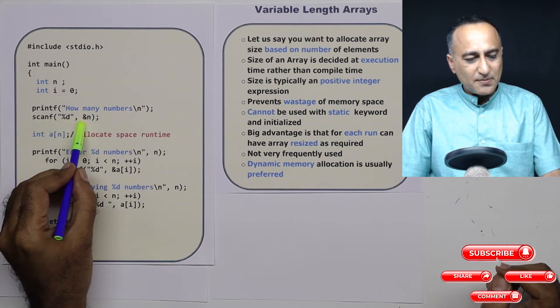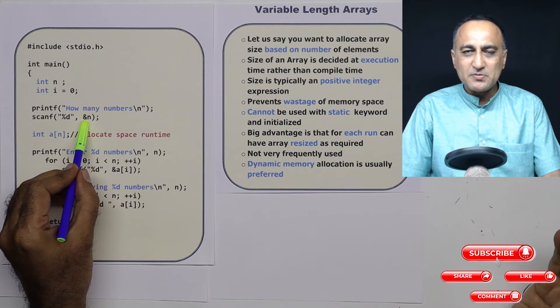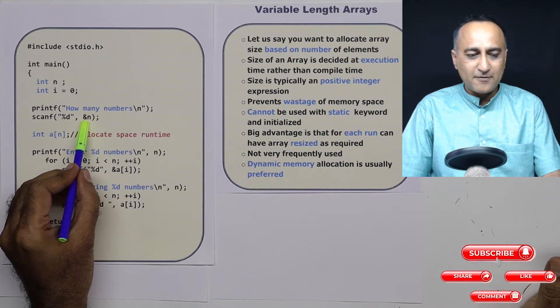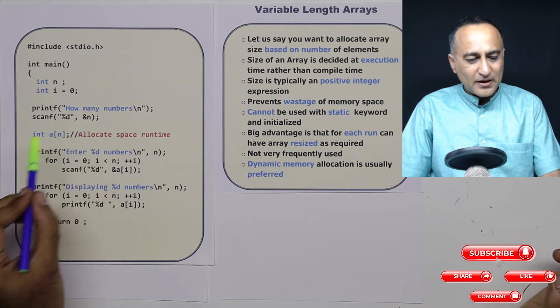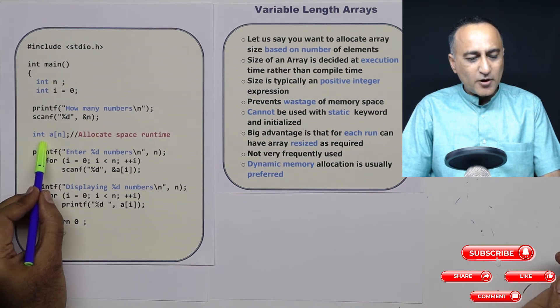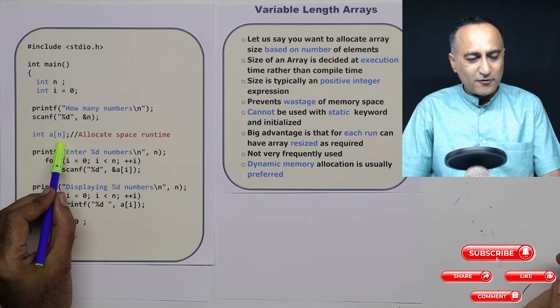So the user sometimes may say 10, sometimes may say 1000, sometimes may say 10,000, sometimes just say five. So based on the value of n, I am defining or allocating space for an array saying a of n.